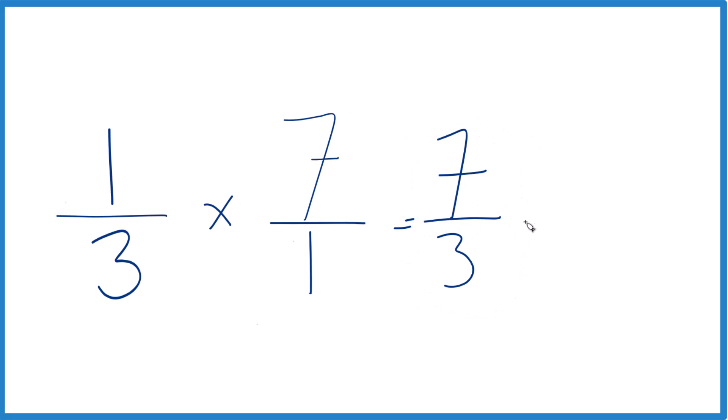You could change it to a mixed number, because three goes into seven two times. Three would be six, with one left over, you can bring the three across, and you can get two and one-third if you need a mixed number.